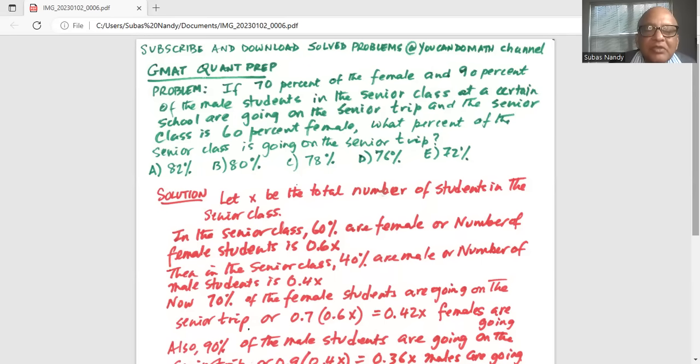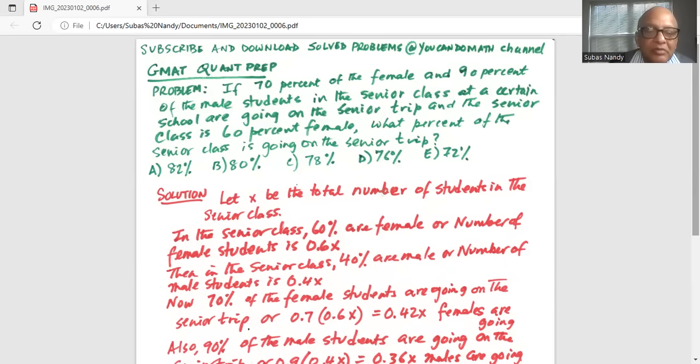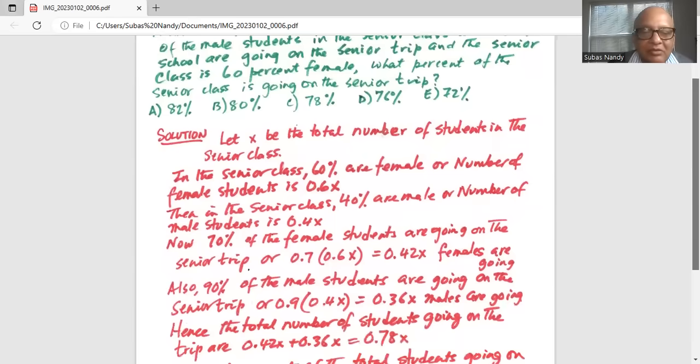Now, 70% of the female students are going on the senior trip or 0.7 times 0.6X is equal to 0.42X females are going on the trip or taking the trip.